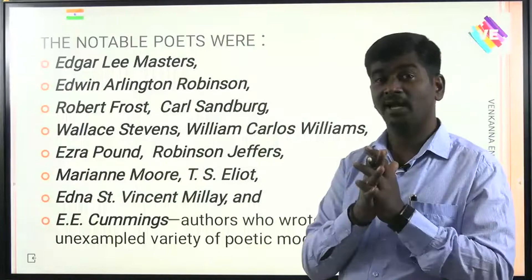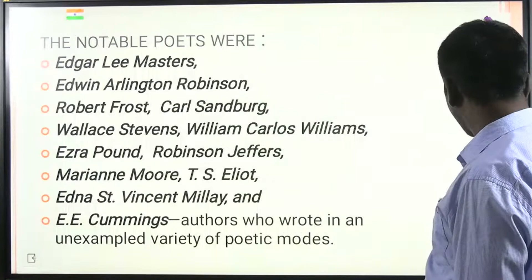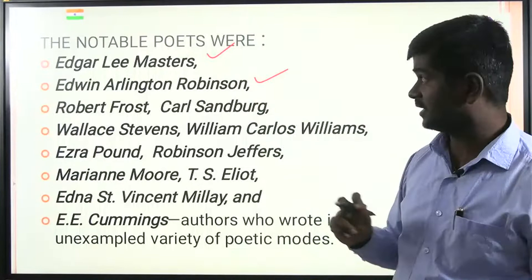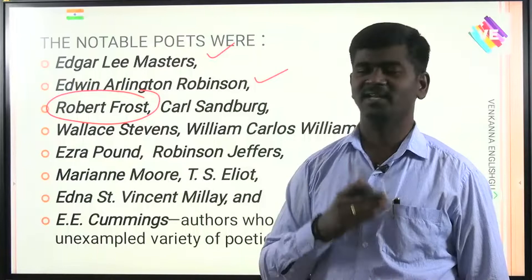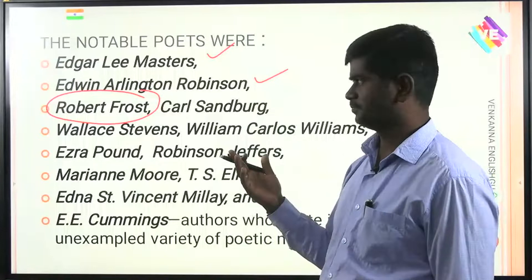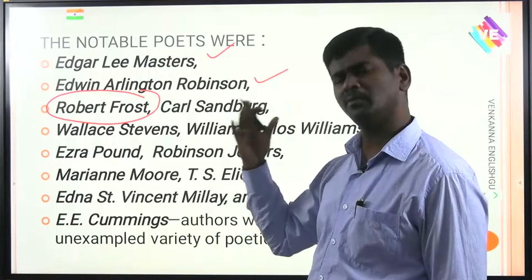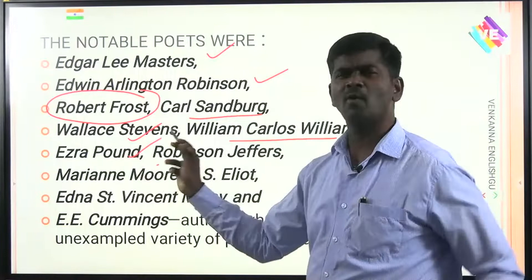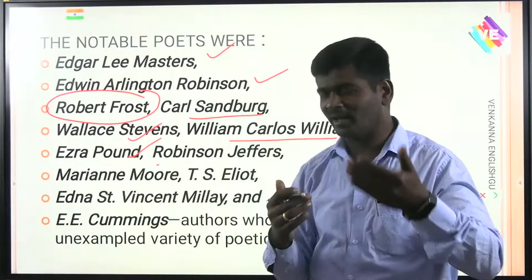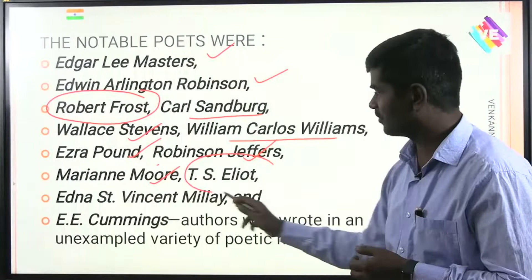The notable poets of the time included Edgar Lee Masters, Edwin Arlington Robinson, and Robert Frost. This age is also called the Age of Robert Frost — a very innovative writer known for dramatic lyrics like 'Home Burial' and 'The Road Not Taken,' whose poetry is set in New Hampshire. Other notable poets include Carl Sandburg, Wallace Stevens, William Carlos Williams, and Ezra Pound, a companion of T.S. Eliot, as well as Robinson Jeffers and Marianne Moore.